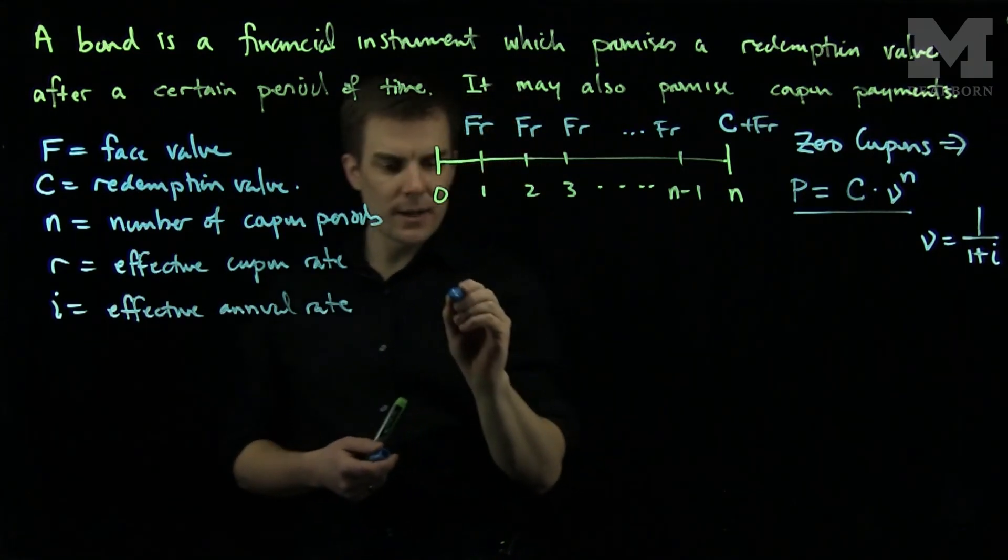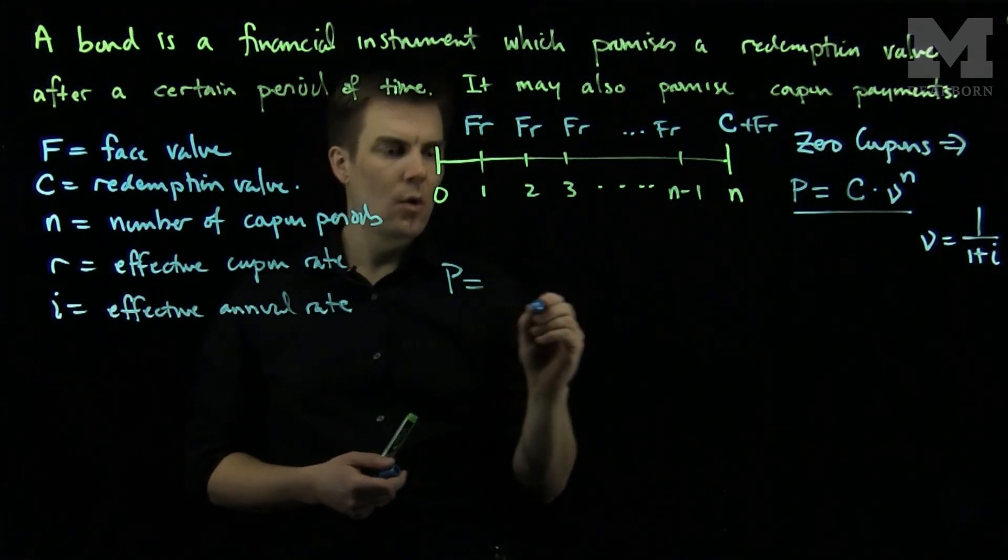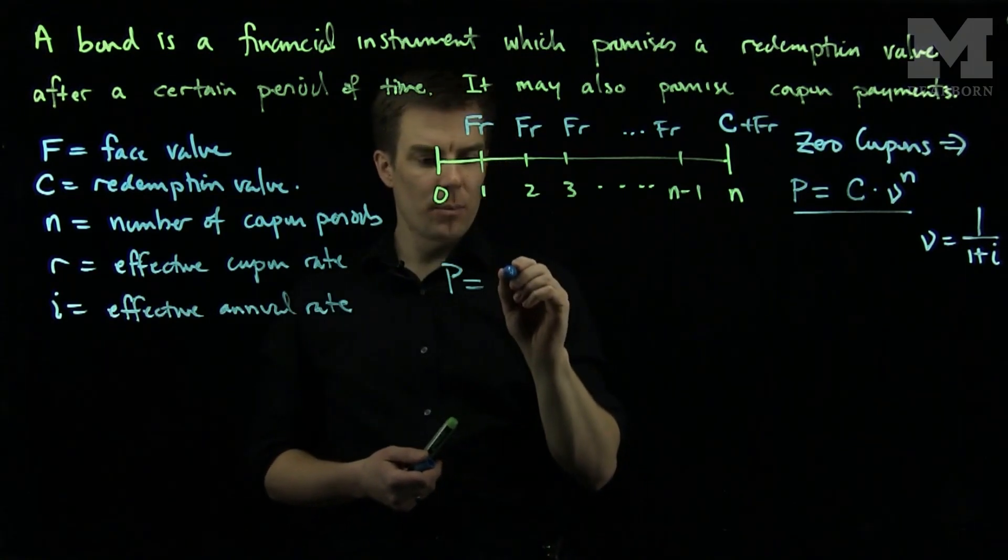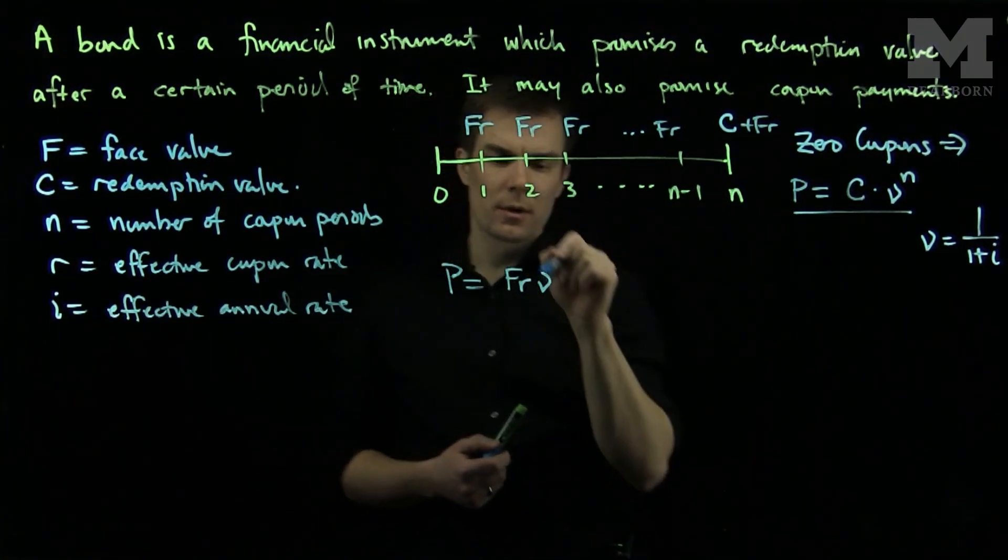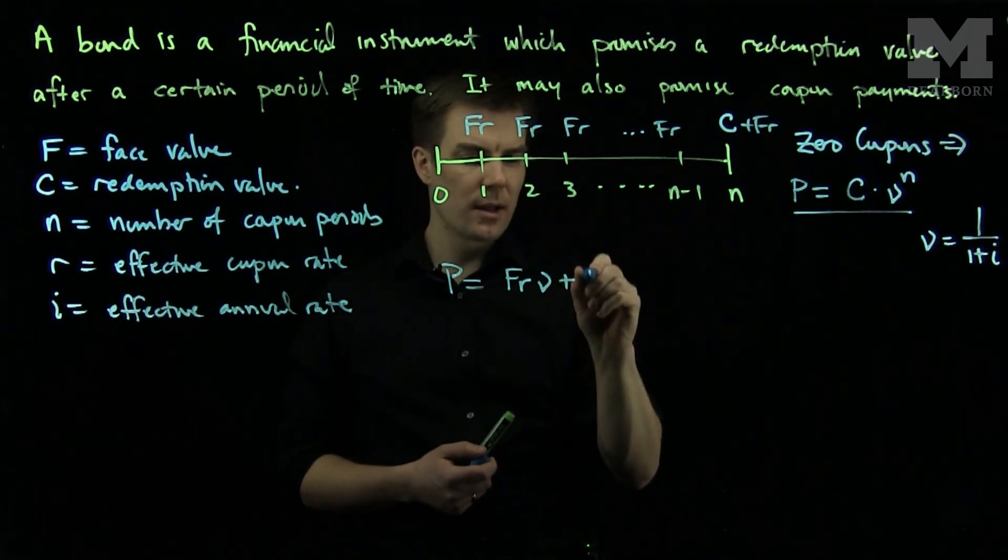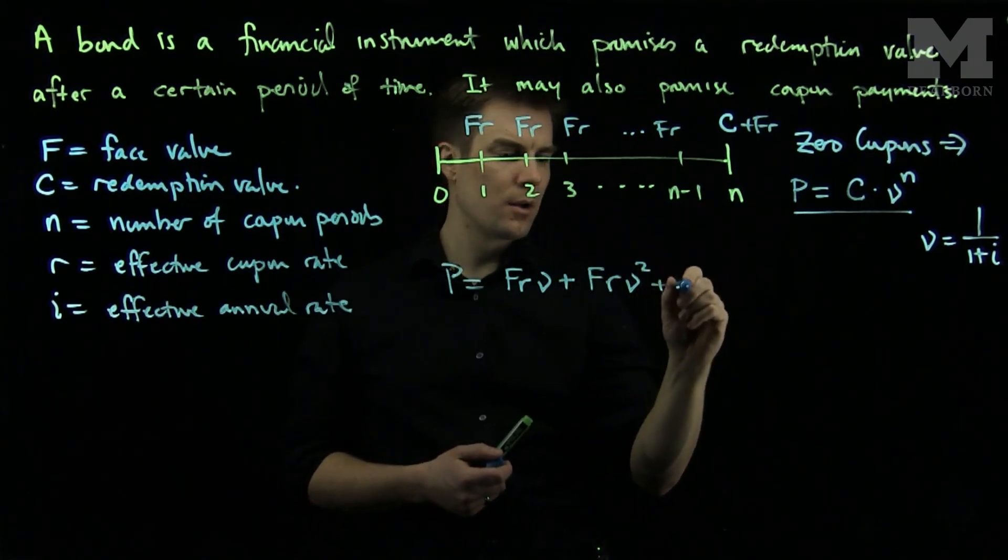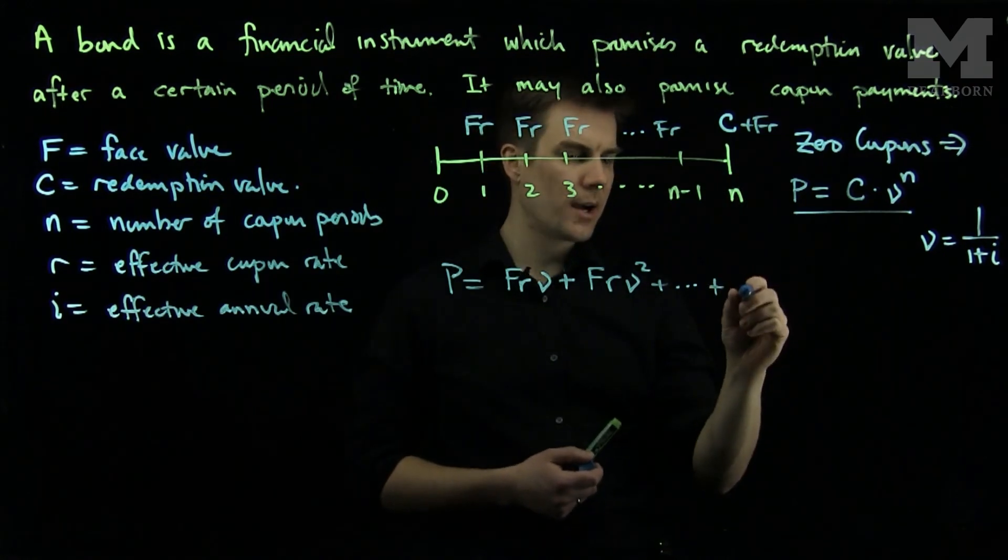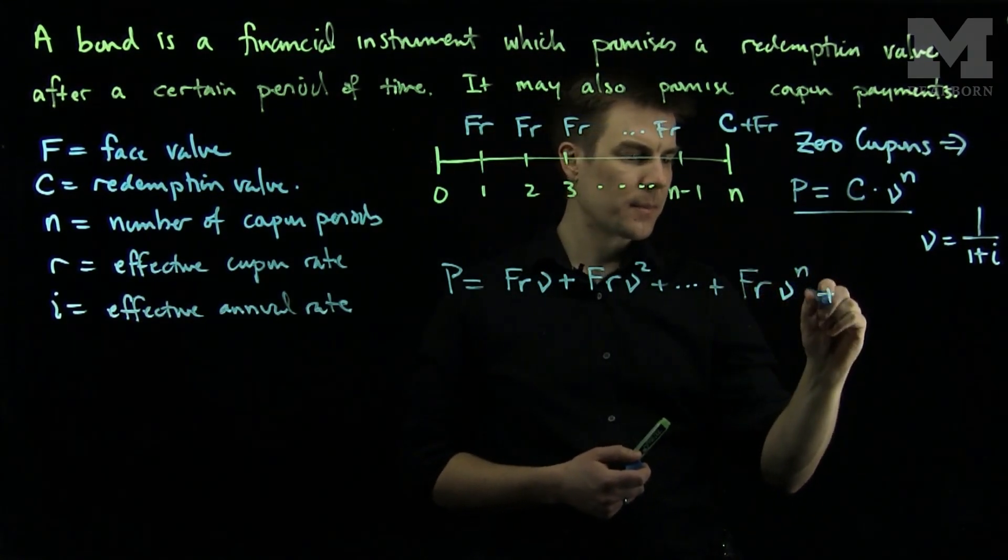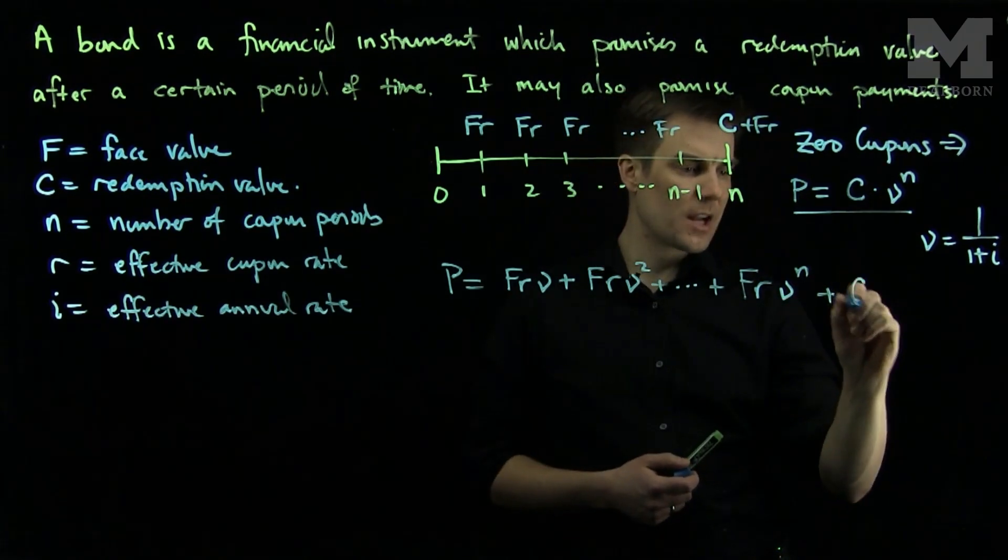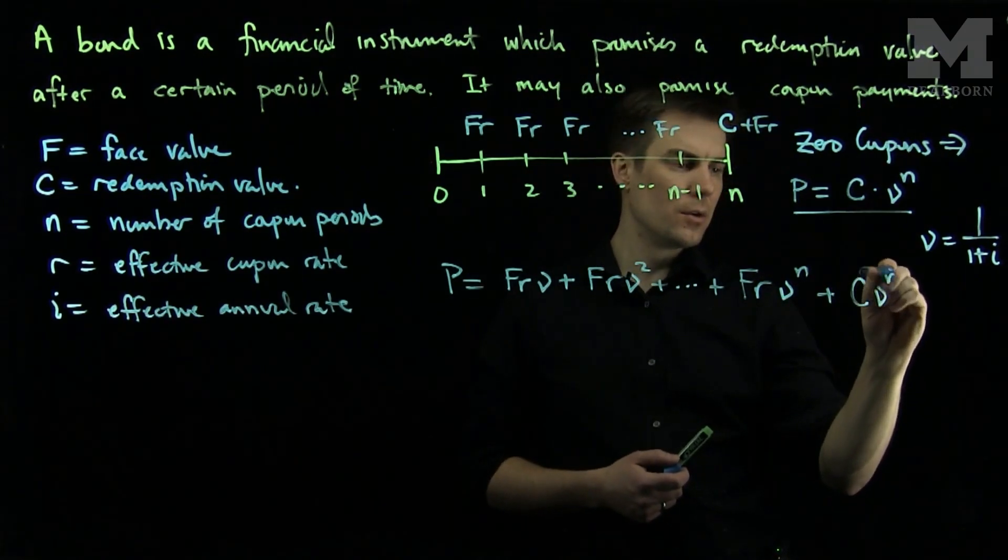So now the price of a bond with coupons will be given by the following. It will be FRν, that will be the present value of the first coupon, plus FRν² all the way down to the last coupon, which will be FRν^N. And then it will also be the redemption value C times ν^N.